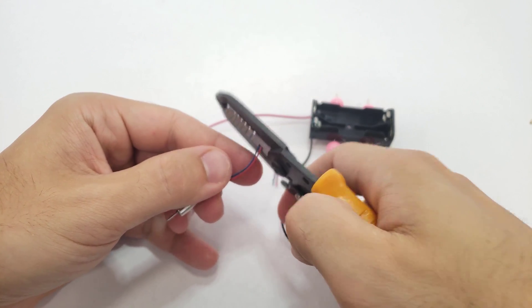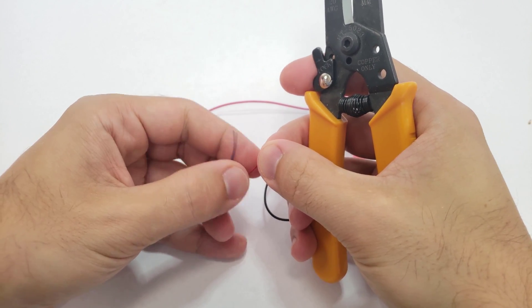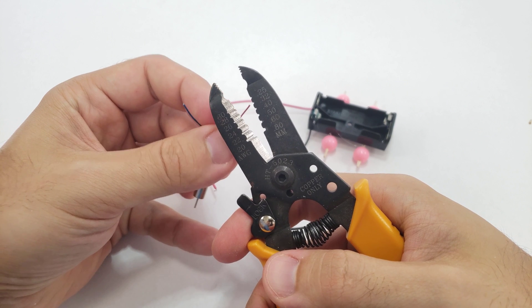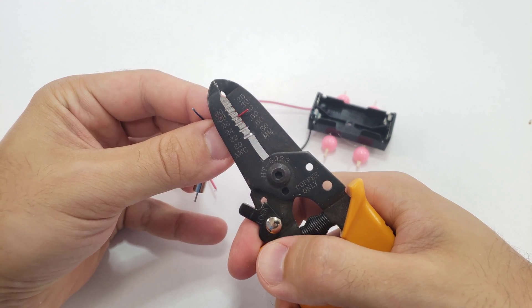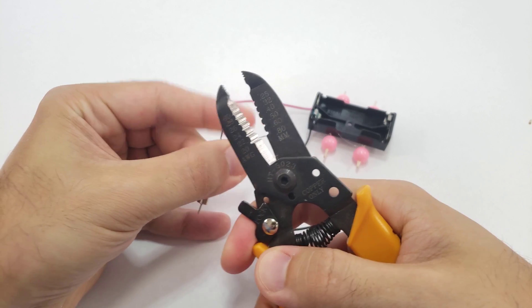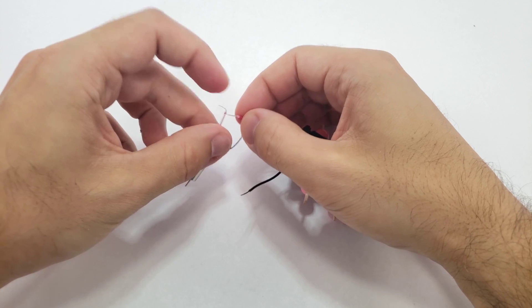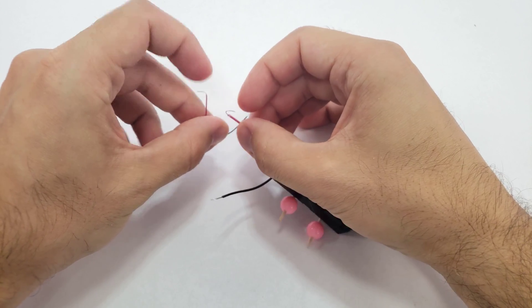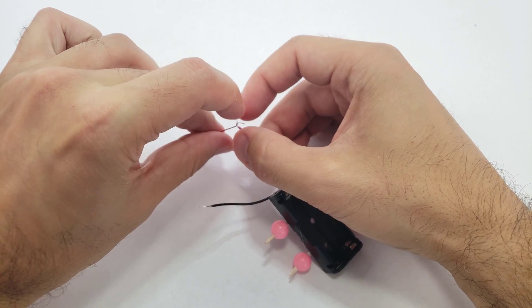Now it's time to connect your circuit. Cut the motor wires and the battery holder wires so they are each a few centimeters long. Then strip at least 5 millimeters of insulation off the end of each wire. Twist the wires together, red to red and black to blue, to make the circuit.